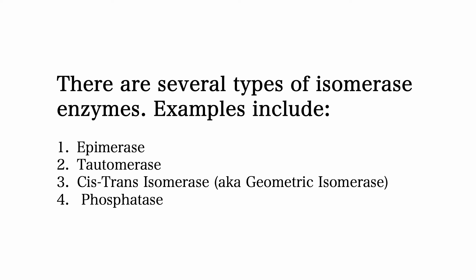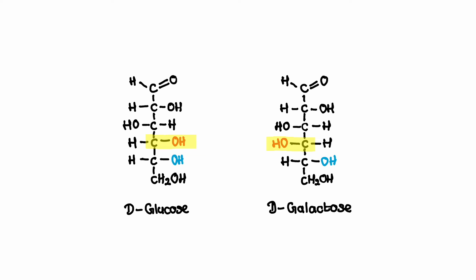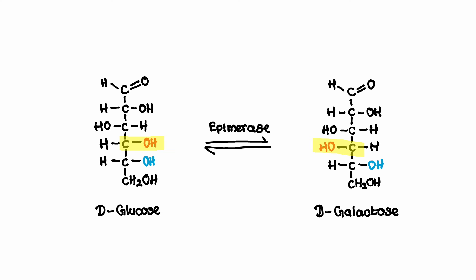There are also several types of isomerase enzymes. Some common types include epimerases, tautomerases, cis-trans isomerases, and phosphatases. Epimerases are enzymes that convert one epimer into another. Epimers are stereoisomers that differ in the configuration of a single chiral center. For instance, epimerases are involved in the interconversion of glucose and galactose, which are epimers at the C4 carbon atom. By facilitating the rearrangement of functional groups around the chiral center, epimerases ensure that specific stereoisomers are available for essential biochemical pathways.